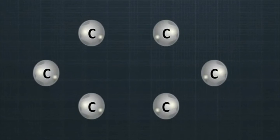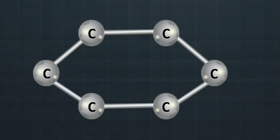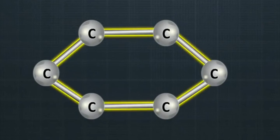Catenation is a remarkable property of carbon to form bonds with itself. This property of forming bonds with atoms of the same element is called catenation.